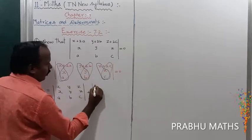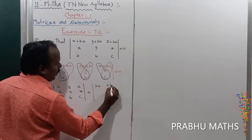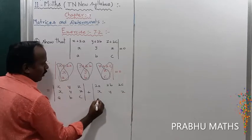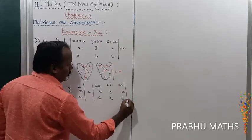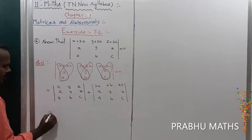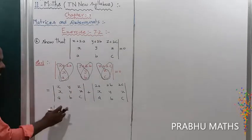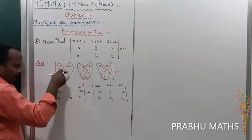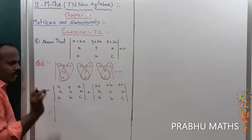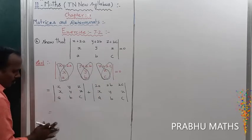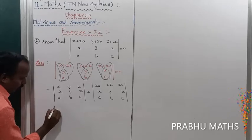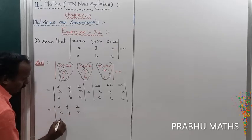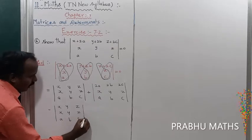The second determinant is: 2A, 2B, 2C in the first row, then X, Y, Z, then A, B, C. So by property number 7, the result equals: determinant of X, Y, Z — X, Y, Z — A, B, C, plus the next term.